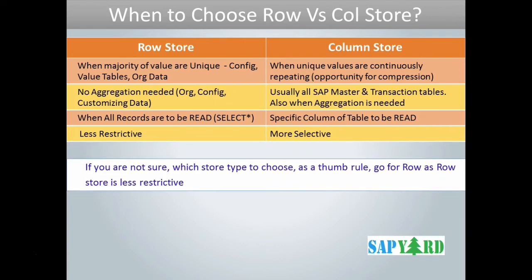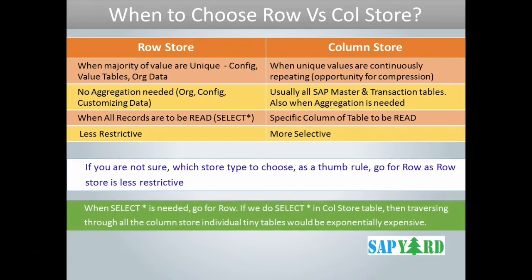Instead of doing a column store, if you wrongly set the table as row store and then try to use the table for read and write, you are still okay, because in HANA the performance would fall a little but it will not hamper drastically. But if you do a SELECT * on a column store table, you are in a soup. Since all the fields of a column store table are physically stored as tiny tables in the database, a SELECT * will have to traverse through each tiny table to return the data. Say you have 100 fields in a column store table — that means there are 100 tiny tables behind the scenes. The system would do a SELECT from 100 individual tables. Traversing through 100 tables would have a negative impact on performance, and it would degrade exponentially even if you have an in-memory HANA database. So please take note: SELECT * is a strict no-no in a column store table.